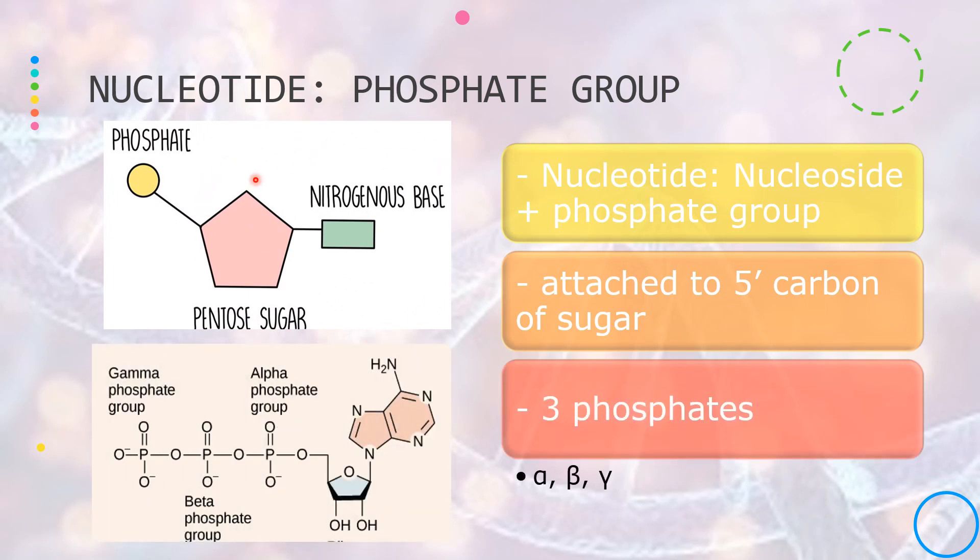The nucleoside composed of a sugar and a nitrogenous base will be converted into a nucleotide by the addition of a phosphate to the 5 prime carbon of the sugar. Up to three individual phosphates can be attached in a series.